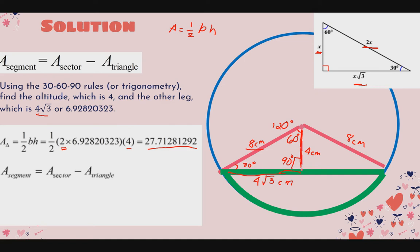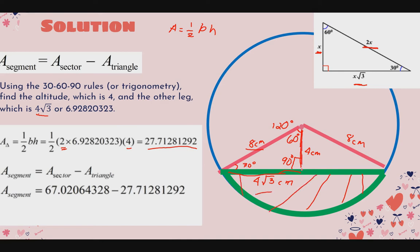Since we now have the area of the sector and the area of the triangle, we subtract them to get the area of the segment. Area of segment = 67.0206432 − 27.71281292 = 39.30783036. Since the instruction says to express the answer to the nearest integer, we round to the whole number. The final answer is 39 square centimeters. Remember to always include the squared unit since we are talking about area.